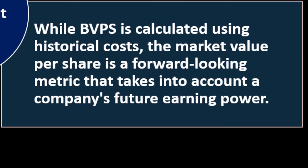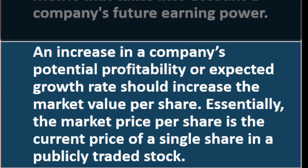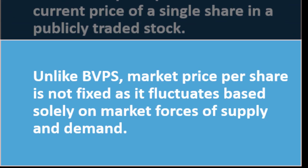How does book value per share differ from market value per share? Book value per share is calculated using historical costs, while market value per share is a forward-looking metric that takes into account a company's future earning power. An increase in a company's potential profitability or expected growth rate should increase the market value per share. Essentially, market price per share is the current price of a single share of publicly traded stock — unlike book value per share, it is not fixed and fluctuates based solely on market forces of supply and demand.